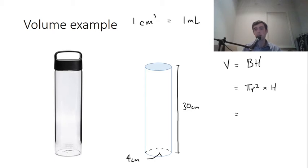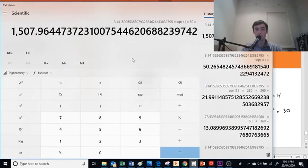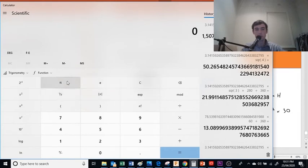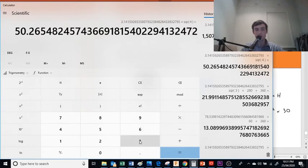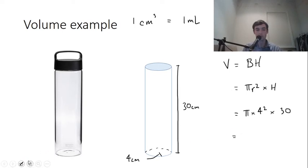Okay, and when we substitute numbers in here, we find that r is 4 centimeters, so we've got pi times 4 squared. We're timesing that by 30. Okay, now let's use a calculator to work that out because we need pi from the calculator. So pi times 4 squared times 30. So it's roughly 1,508 centimeters cubed.